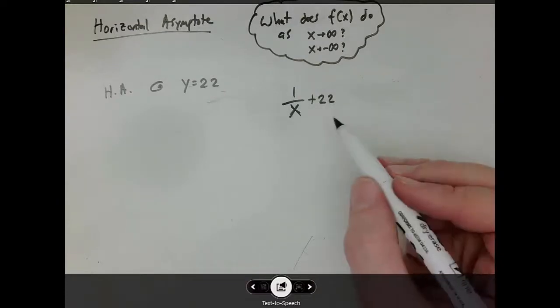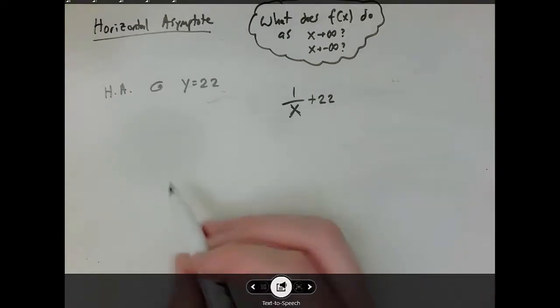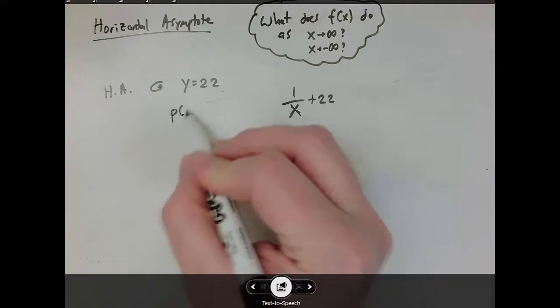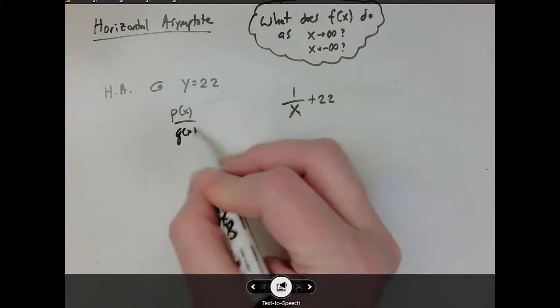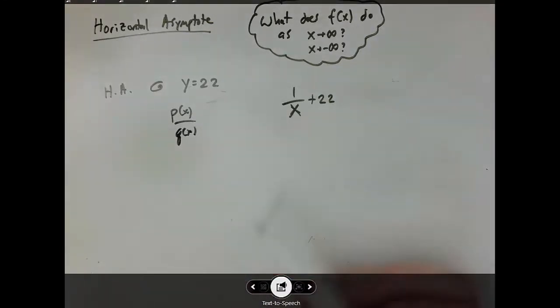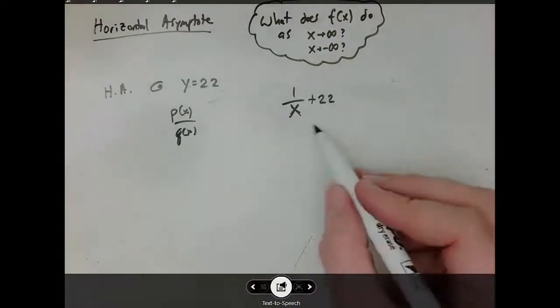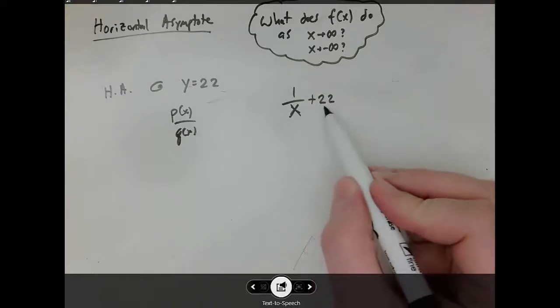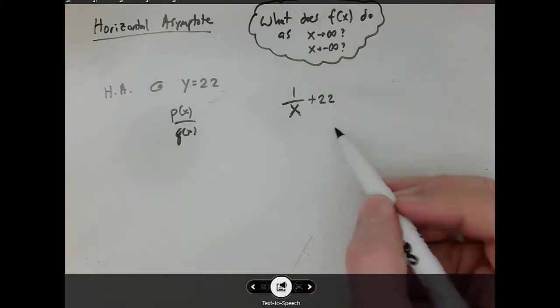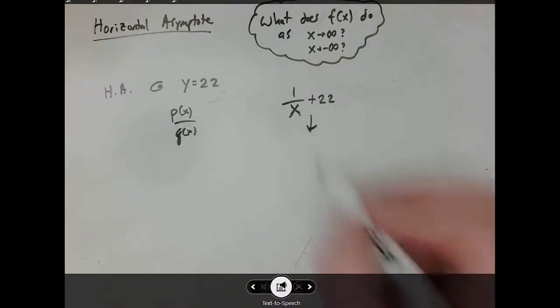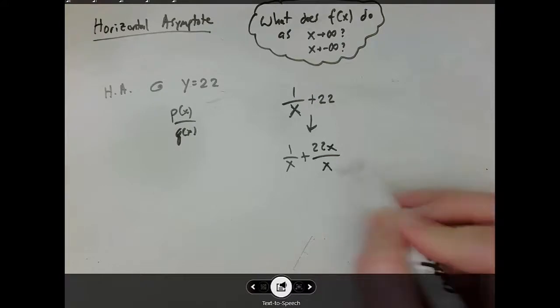And if I wanted you to write it in the form of a rational expression, a rational expression is p of x over q of x, where p and q are both polynomials. This doesn't quite fit the form because here I'm adding 22 on the outside, but I could just rewrite this as 22x divided by x so that I can combine them because they'll have the same denominator. So I've got one over x plus 22x over x. So that's the same thing.